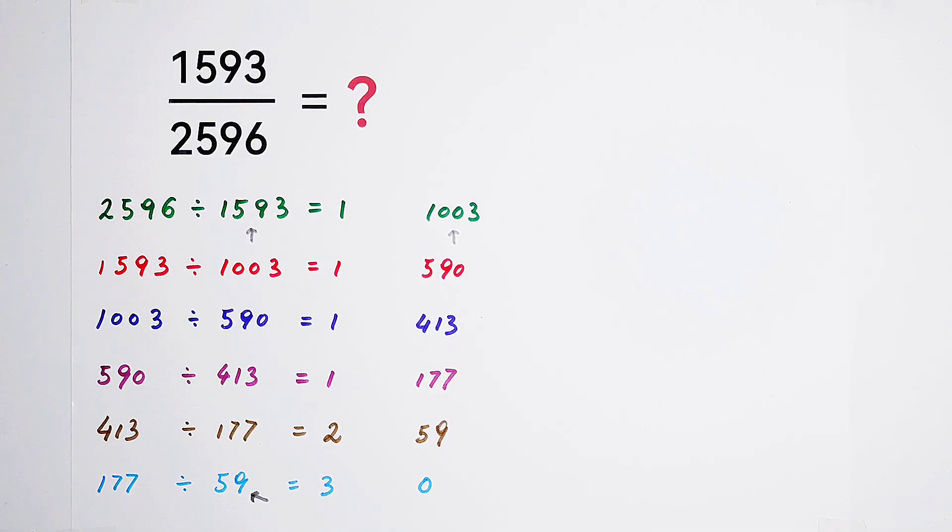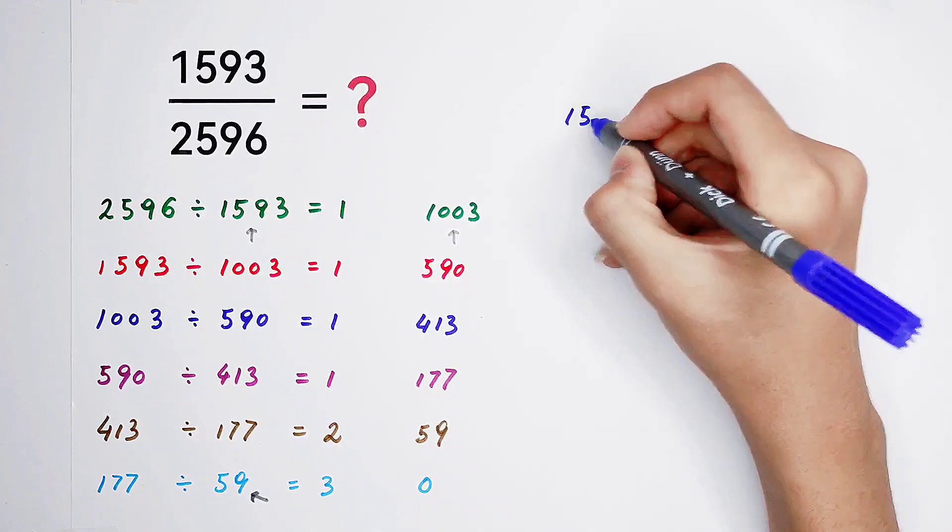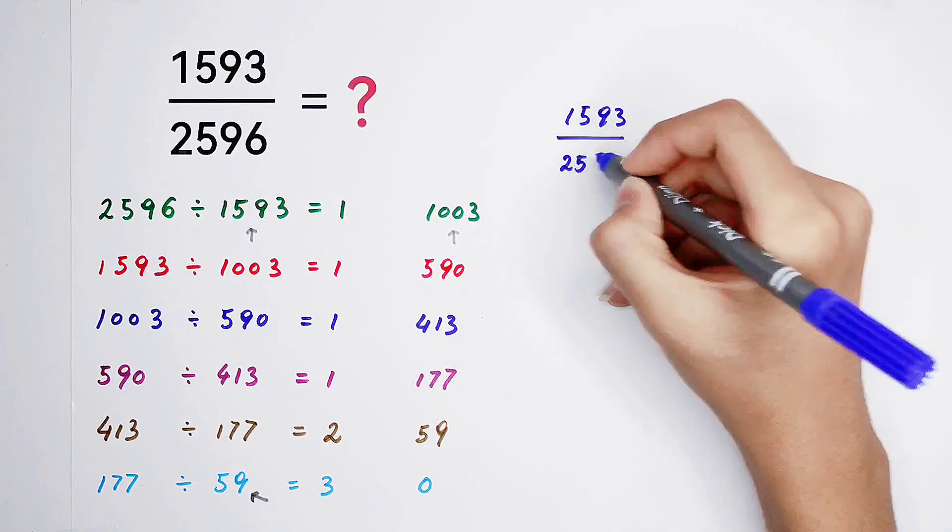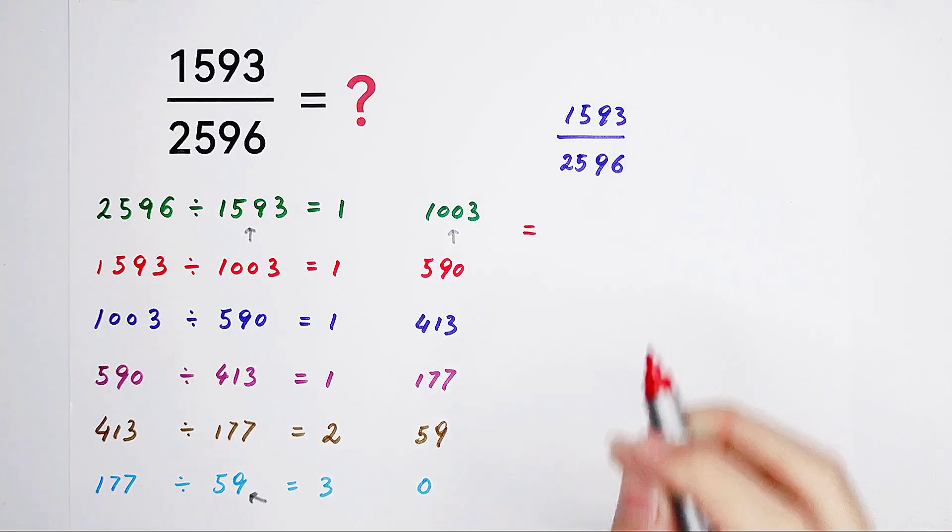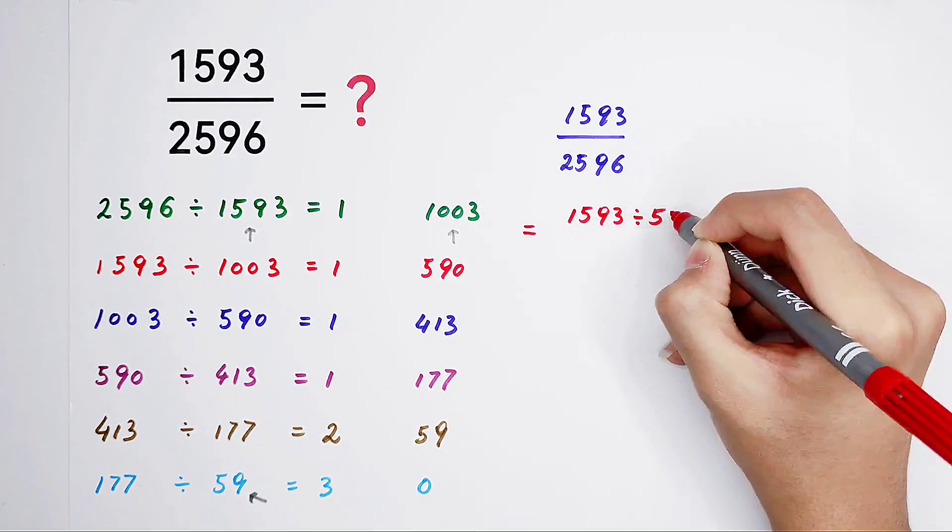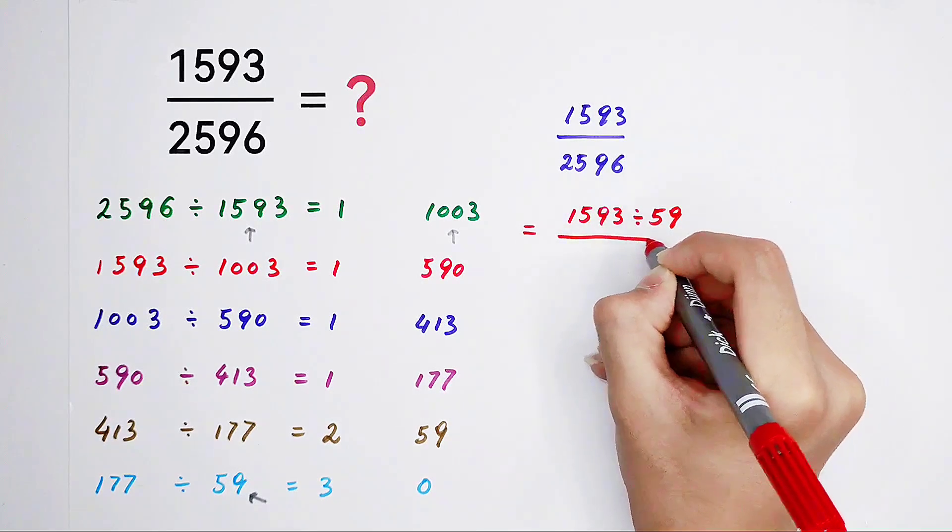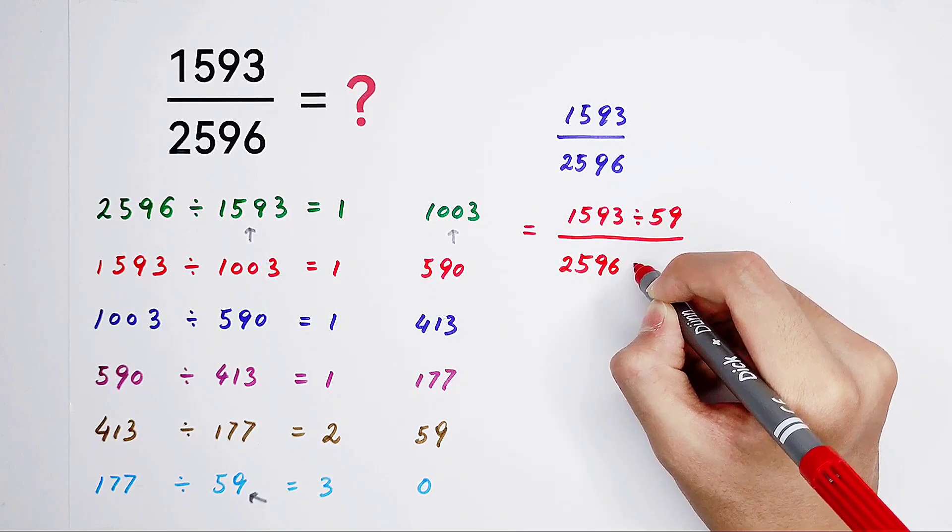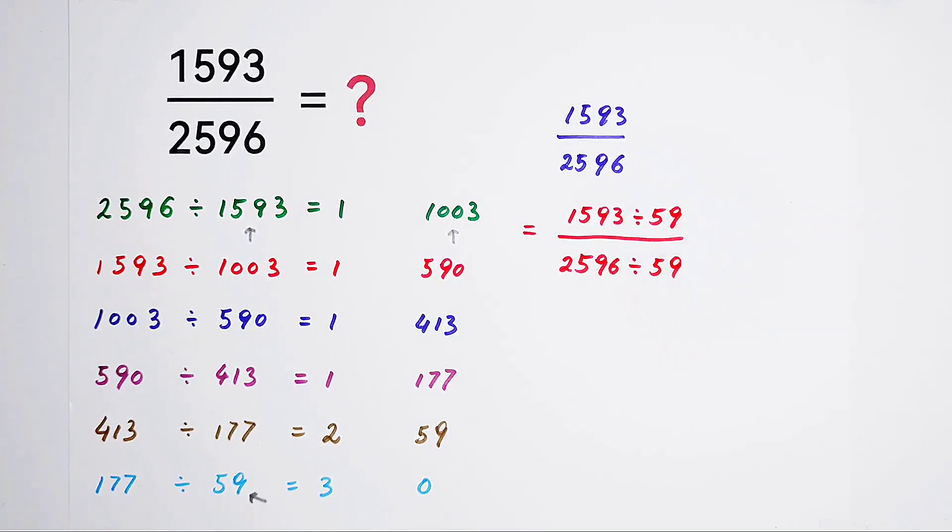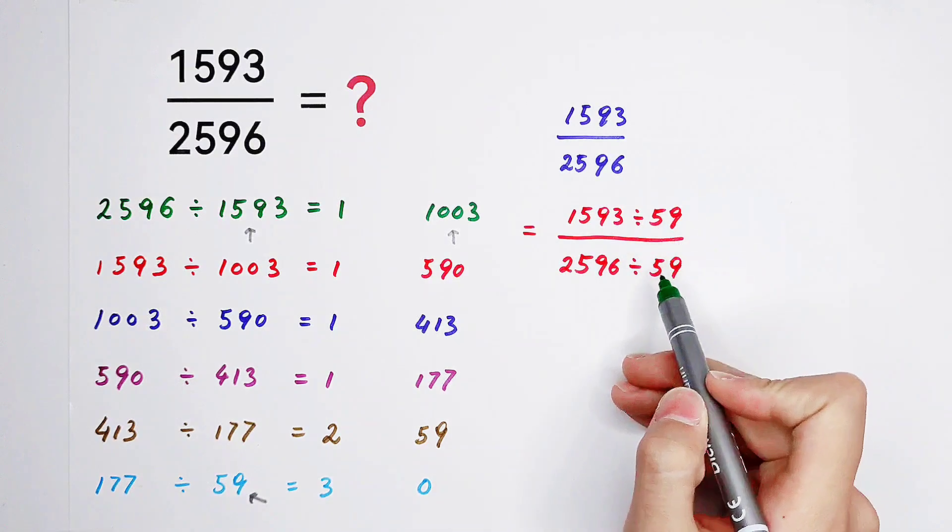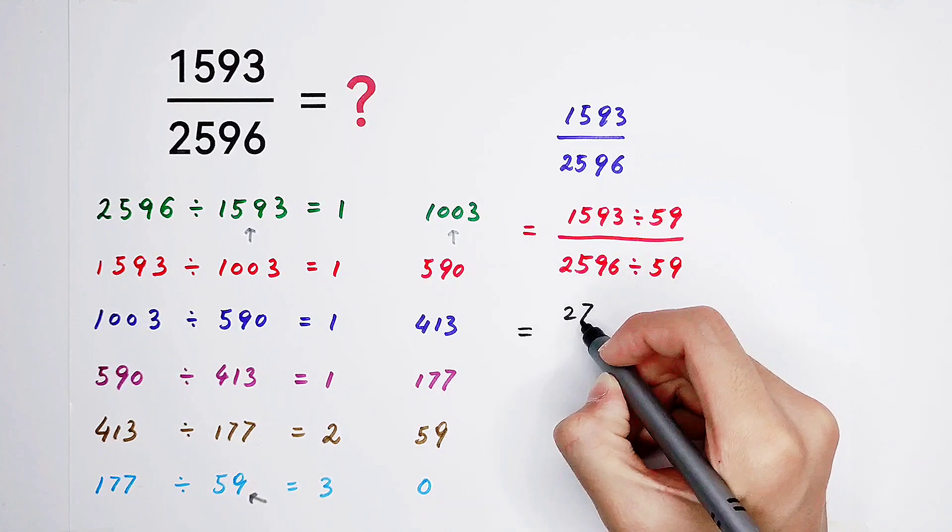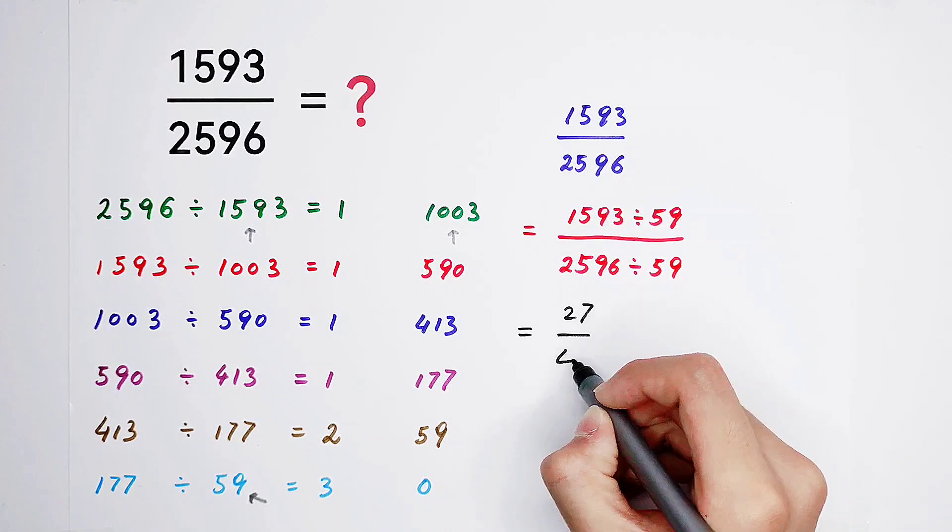So, now we can simplify this fraction. Write it here. Then, it is equal to 1,593 over 59. Then, divide it by 2,596 over 59. Evaluate our numerator and our denominator. Then, the numerator is gonna be 27 and the denominator 44.